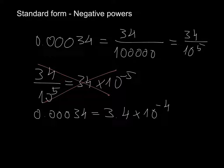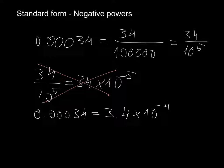So the basic idea is that you always have to have one number, followed by a comma, and then whatever you want after. And this number has to be a non-zero number — so 1, 2, 3, 4, 5 until 9. That's pretty much it.